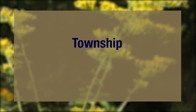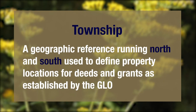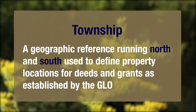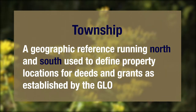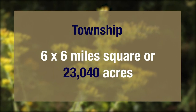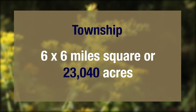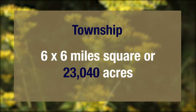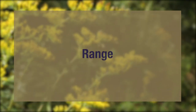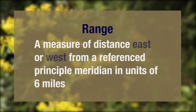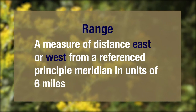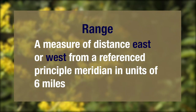Township: a geographic reference running north and south used to define property locations for deeds and grants as established by the GLO. A survey township is nominally 6 by 6 miles square, or 23,040 acres. Range: a measure of distance east or west from a referenced principal meridian in units of 6 miles.